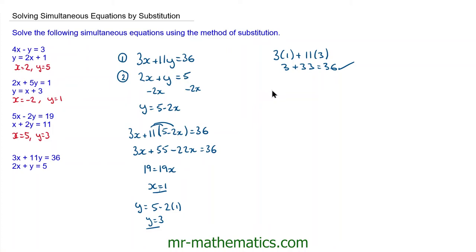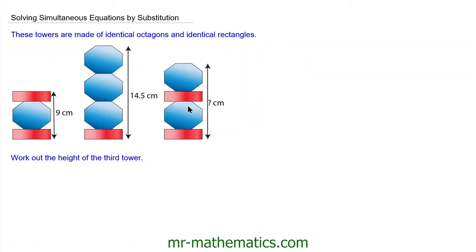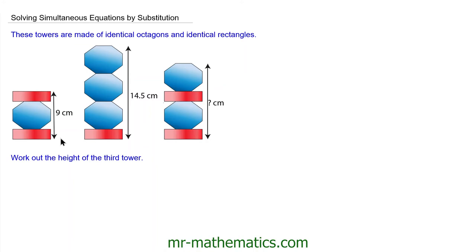Let's try one more question. Now we know how to solve simultaneous equations by substitution, we're going to apply that knowledge to solve a real-life problem, where we've been given three diagrams. The height of the first diagram is 9 centimetres, the second diagram is 14.5 centimetres, and we've been asked to work out the height of the third diagram. We can call the rectangle height x and the octagon height y, so 2x plus y is equal to 9 — equation 1.